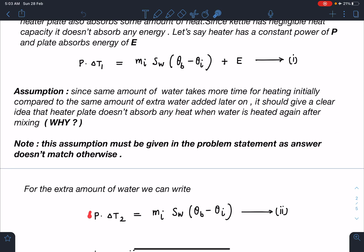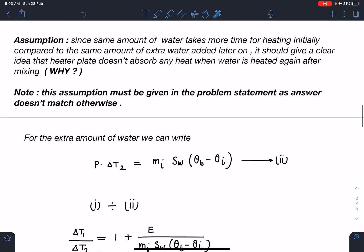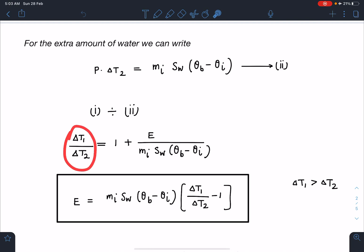We have these two equations. Since P is not given in the problem but they are mentioning constant power, we can divide equation one and equation two. If I divide I'll get Δt₁/Δt₂ = 1 + E/(m_i·s_w·(θ_boiling - θ_initial)). When I simplify, this energy absorbed by the plate is E = m_i·s_w·Δθ·(Δt₁/Δt₂ - 1), where Δt₁ is greater than Δt₂. This is 15 minutes and this is 10 minutes.